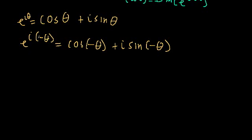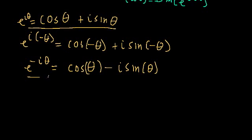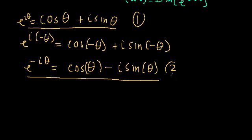This left side is just e to the negative i theta. Since cosine is an even function, cosine of negative theta is just cosine theta. Since sine is an odd function, sine of negative theta gives us negative i times sine theta. We now have two equations — call them equation 1 and equation 2 — and we'll use them to isolate cosine and sine in terms of these two exponential functions.